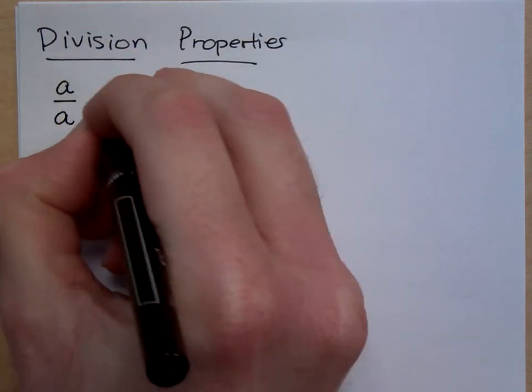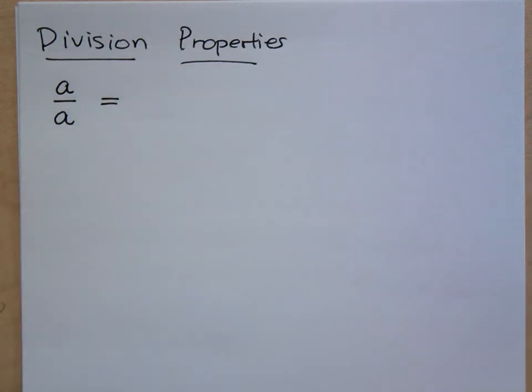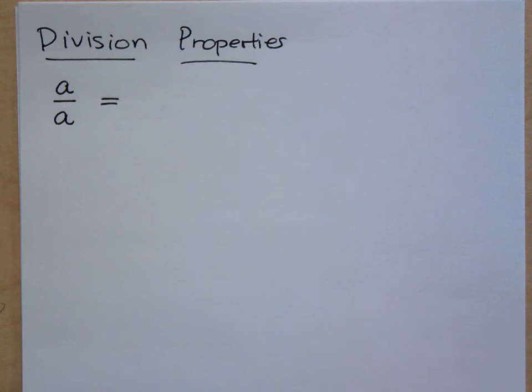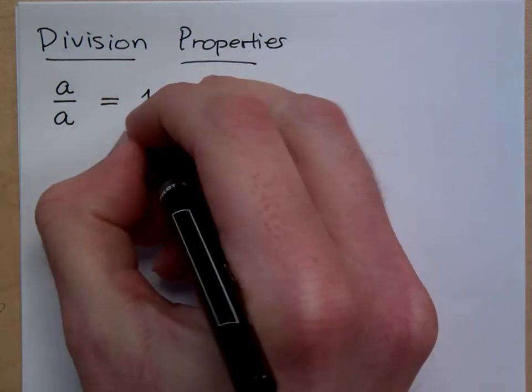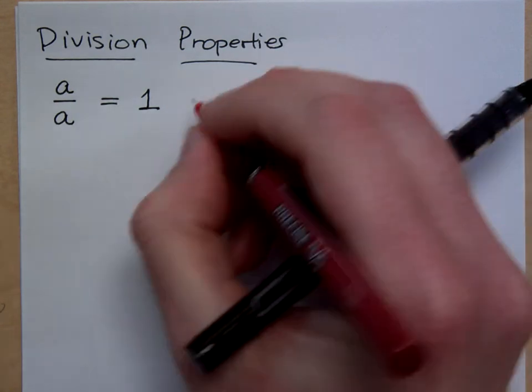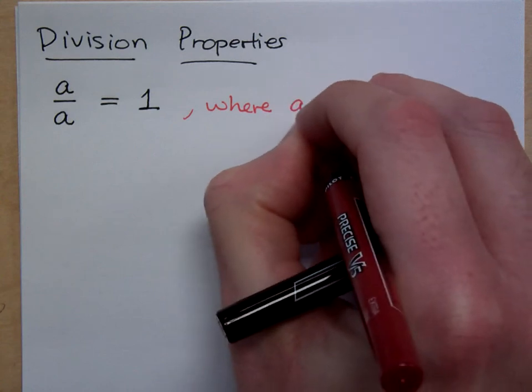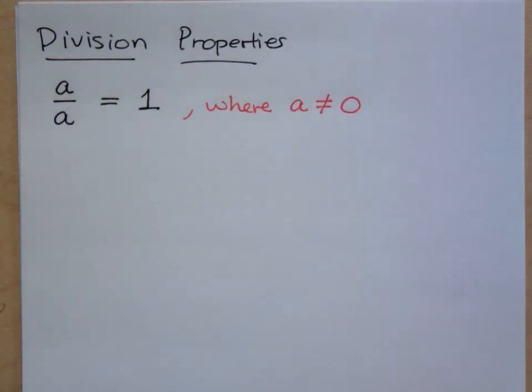If you have any number divided by itself, what do you get? So you're saying that 5 divided by 5 is 5? What's 5 divided by 5? What's 17 divided by 17? We should just get 1, right? But I have to make a little provision here. This is provided that the number you're dividing by isn't zero. Zero gives us issues when it's in certain places.